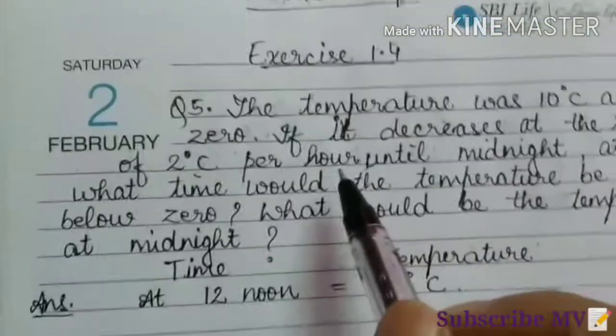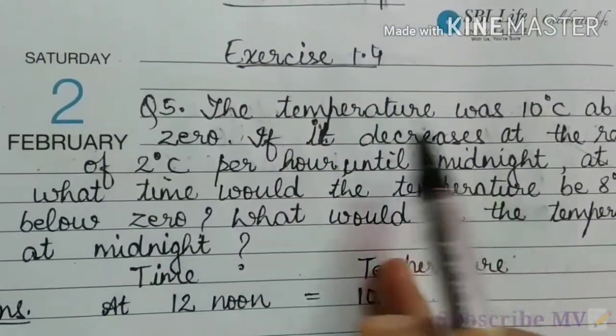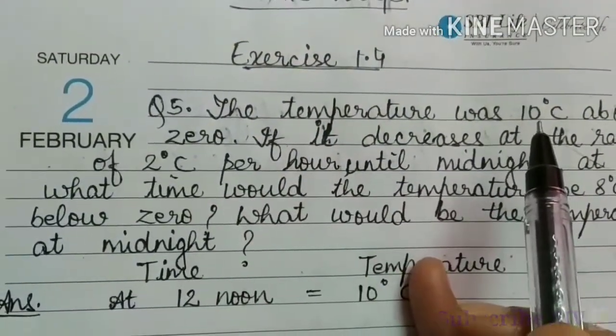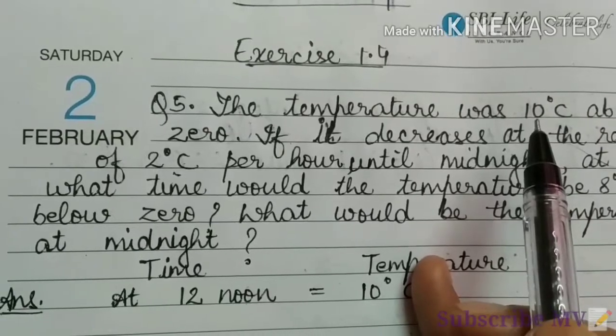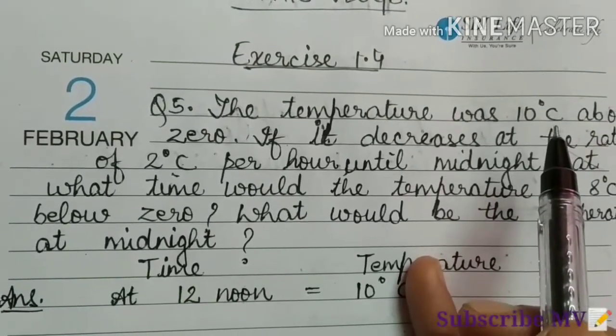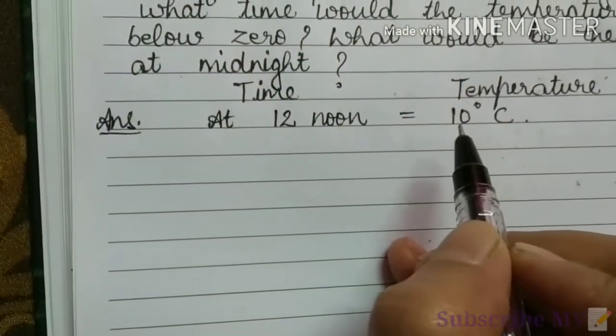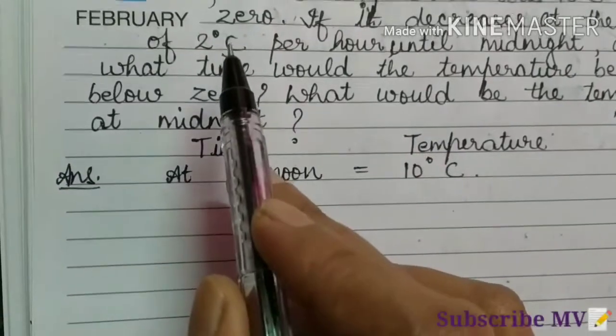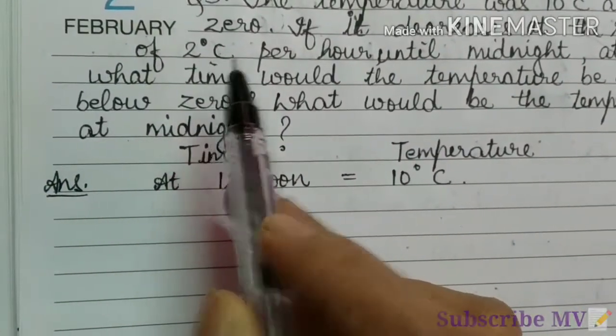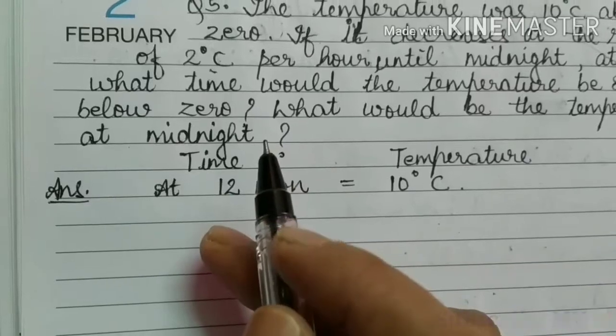Here I have written the question. It is given that at 12 o'clock the temperature was 10 degree Celsius above 0. So at 12 noon temperature is 10 degree Celsius. Then it decreases 2 degree.